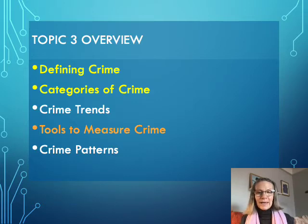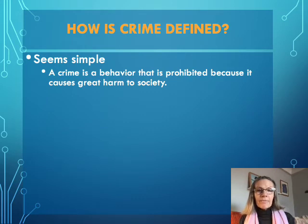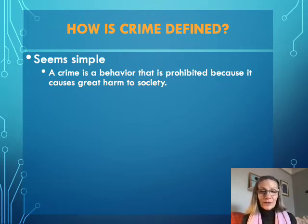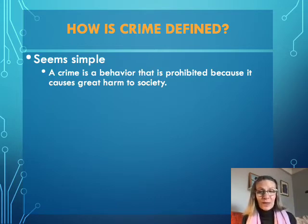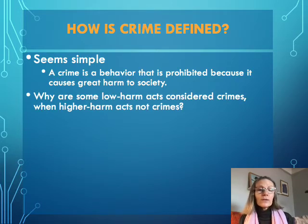So, how is crime defined? It seems pretty straightforward — a crime is a behavior that's prohibited because it causes great harm to a society. You live in a community and people don't want to be subject to harm, so as a community — whether that's a city, state, or nation — we prohibit certain harmful behaviors. If you engage in these prohibited behaviors, there's a legal consequence for those actions.